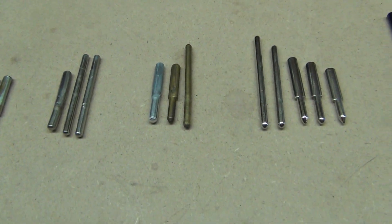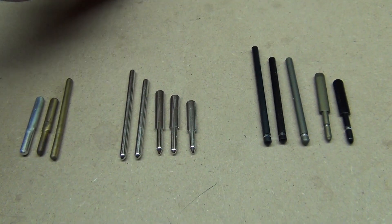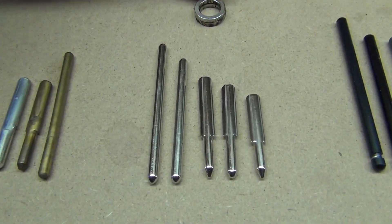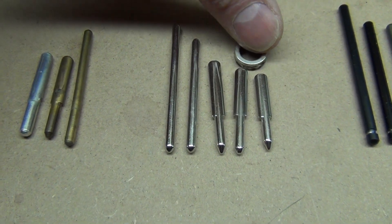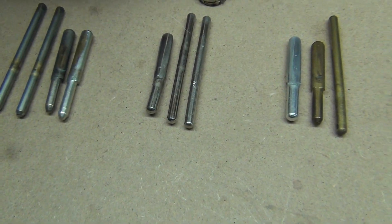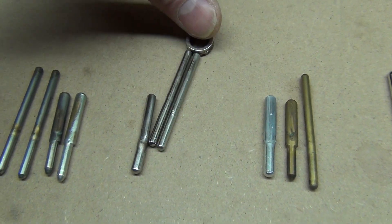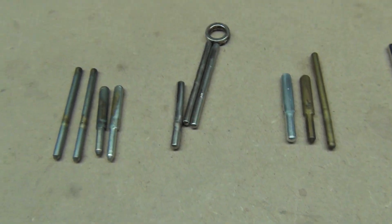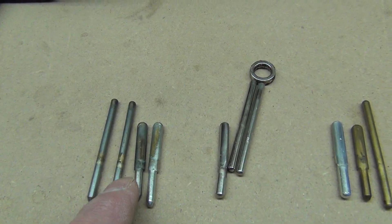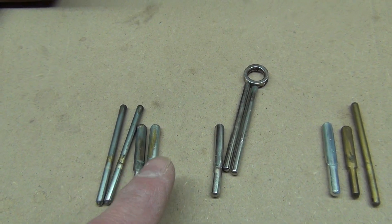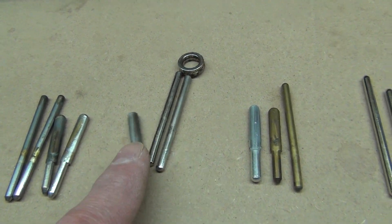Sometimes the only way to tell these pins apart is with a magnet. See, these are brass, so the magnet's not going to stick to them. These are steel, so the magnet will stick to them. So again, nickel plated or chromium plated brass. Nickel or chromium plated steel.